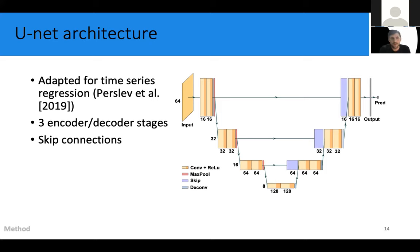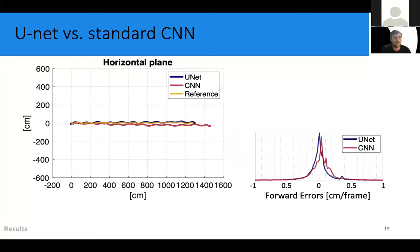So our U-Net uses three encoder and decoder stages, where the time scale of the input data is compressed and decompressed respectively. U-Net skip connections relay information at different temporal scales to the output, which is why they're so well suited for time series data.